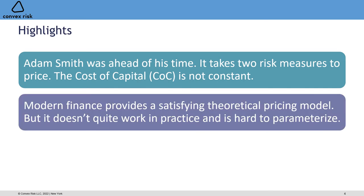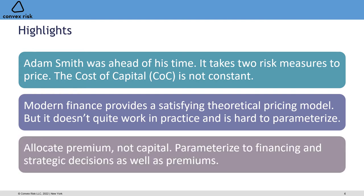The second group of ideas is that modern finance provides very satisfying theoretical models to answer this question. We'll describe those but show that they don't quite work in practice and can be a little hard to parameterize. Then third, we'll talk about the need to allocate premium and not capital. This follows once we've decided the cost of capital is not constant, and to parameterize as thoroughly as possible we should be bringing in financing and strategic decisions as well as insurance premiums.